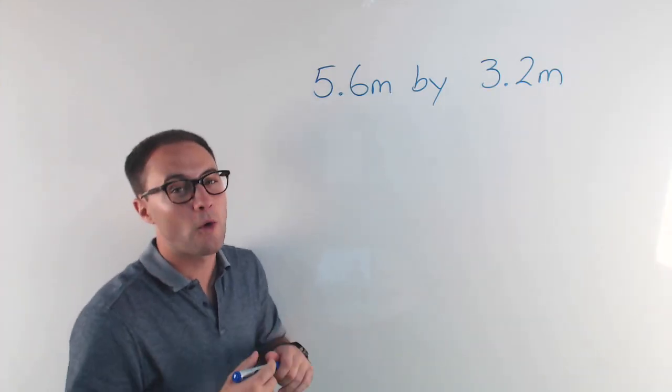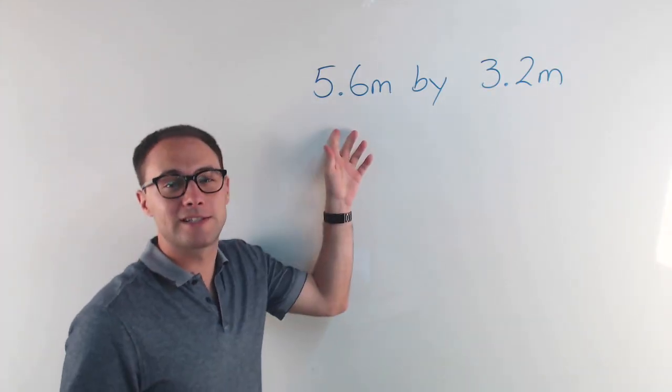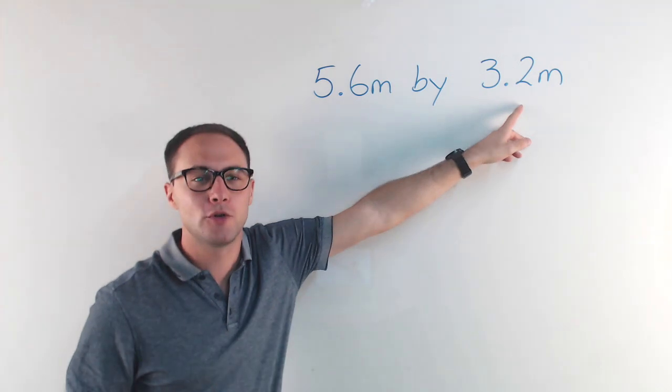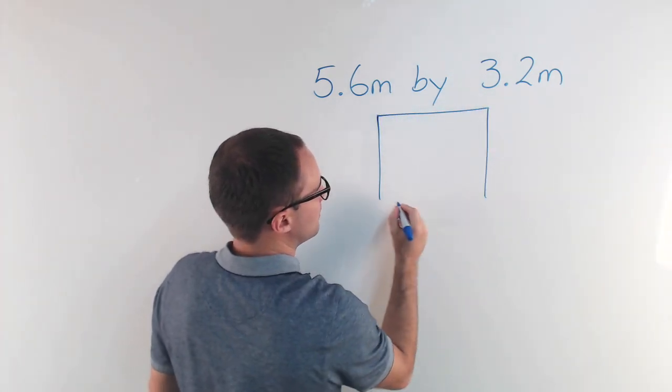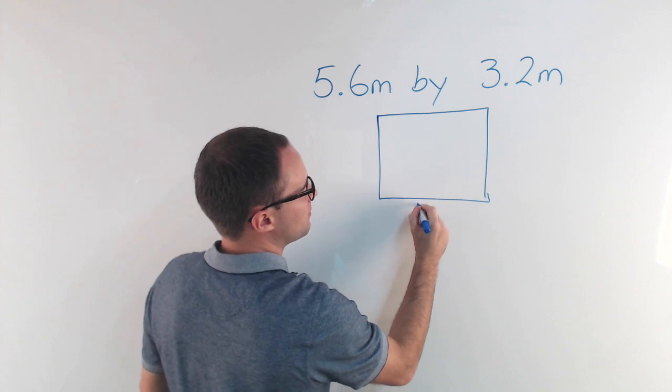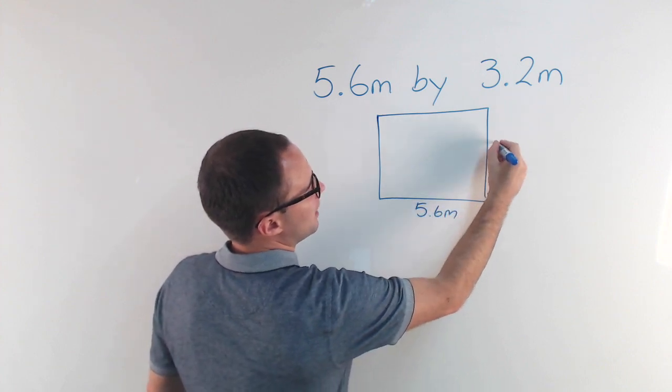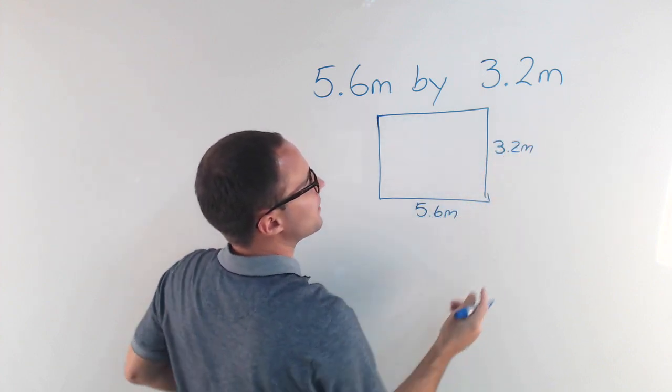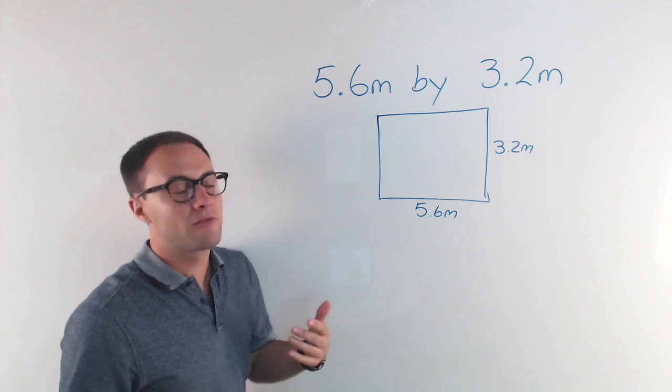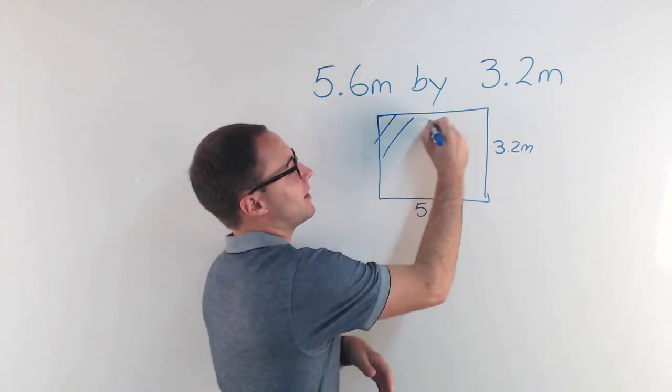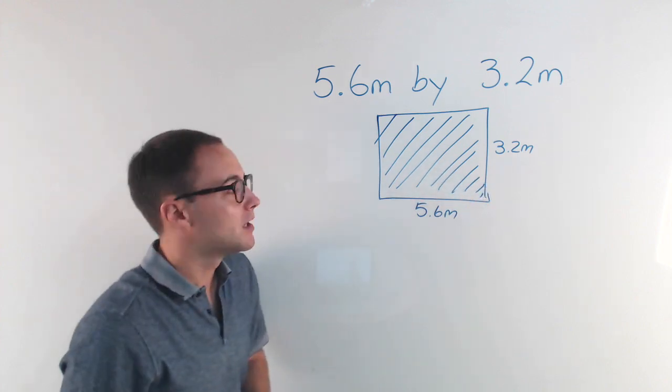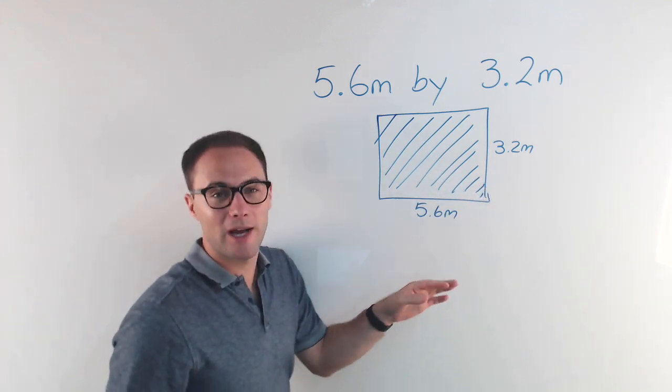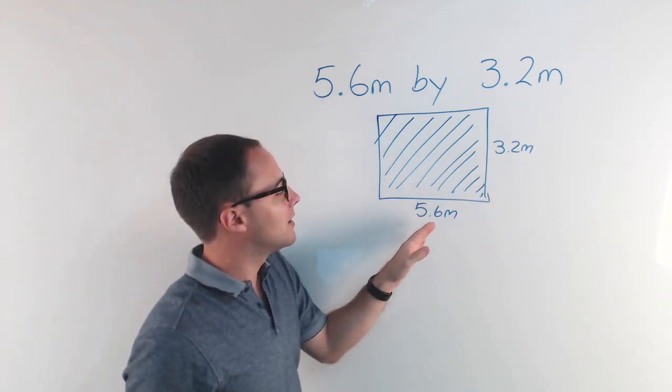All right, so let's talk about that wall. It was 5.6 meters by 3.2 meters. So if you think about drawing a picture, this is going to be about 5.6 meters by 3.2 meters, and we want to know if we're going to have enough paint. So what we need to find is the area—that's what we're covering with the paint. So to do that we're just going to multiply, right? Length times width. So 5.6 times 3.2.